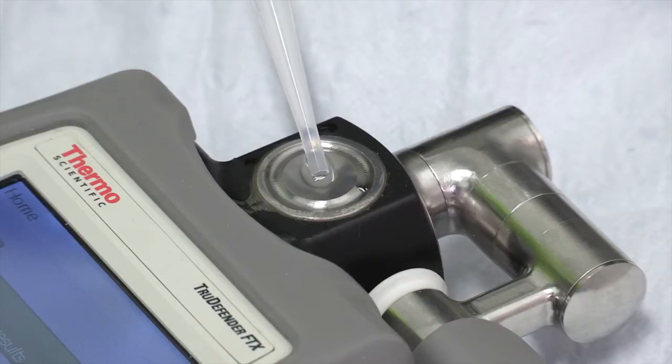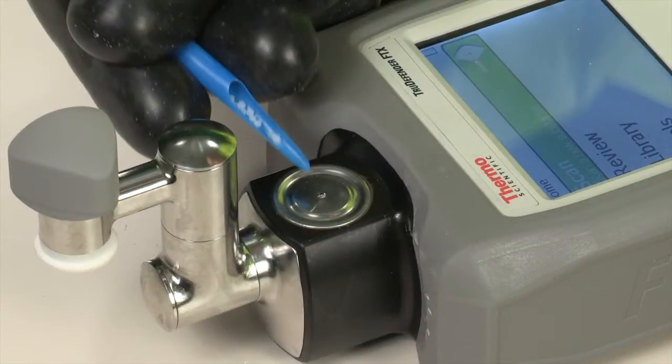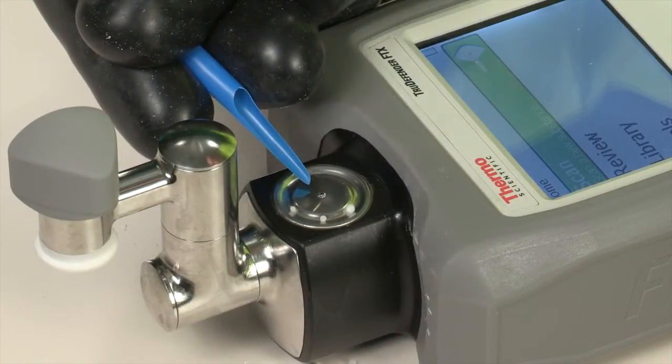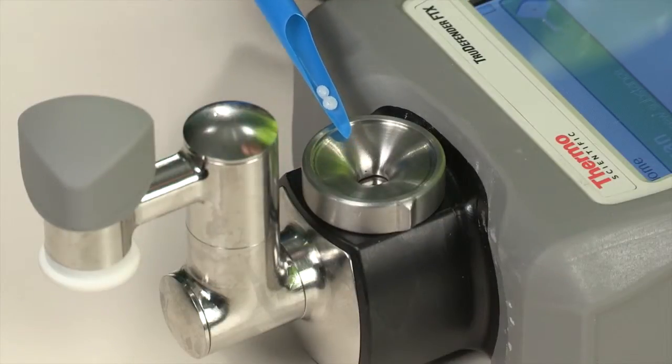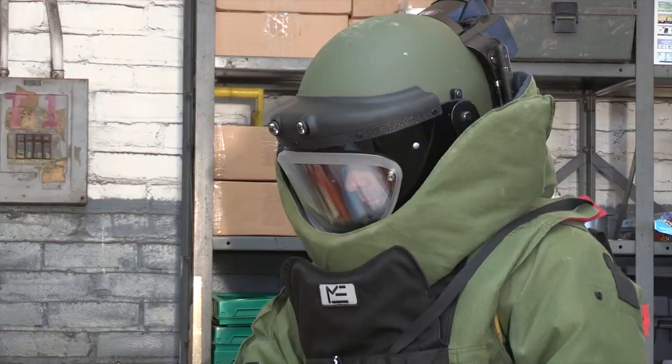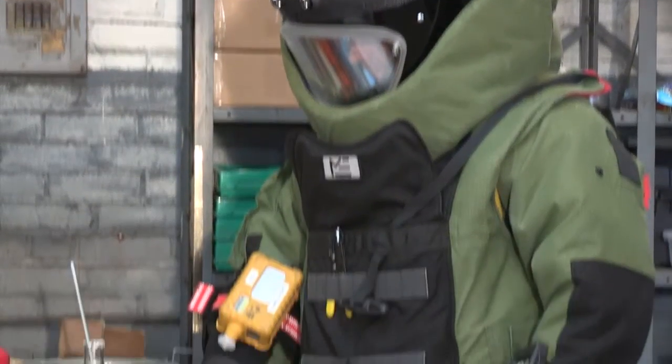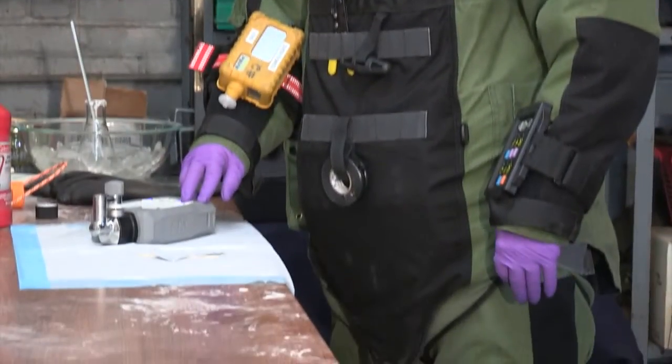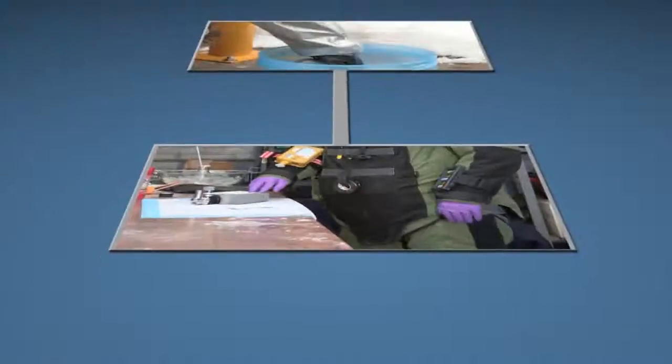Prills, notoriously difficult samples, are easily managed using the reversible sampling accessory. Technicians have clear visibility of the sample surface and can operate the instrument when faced with limited dexterity and visibility.